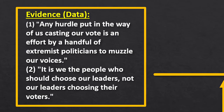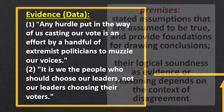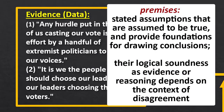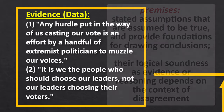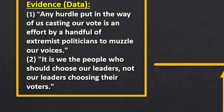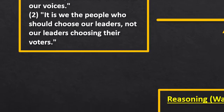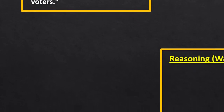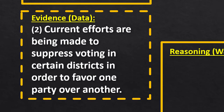And we've got another piece of evidence that, again, is a premise that an audience would accept: that we the people should choose our leaders, our leaders shouldn't choose our voters. But that evidence in and of itself doesn't necessarily make sense as evidence unless we also include some implicit evidence that the writer did not include in the letter, but she's presuming that we're already familiar with it — and that's with regard to current efforts being made to suppress voting in certain districts in order to favor one party over another.